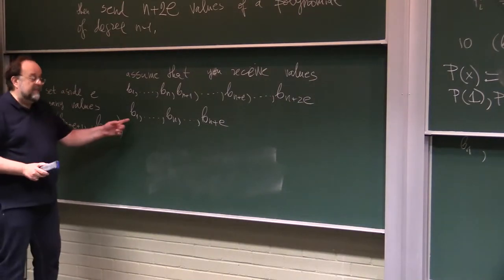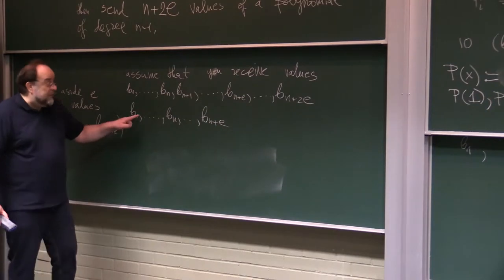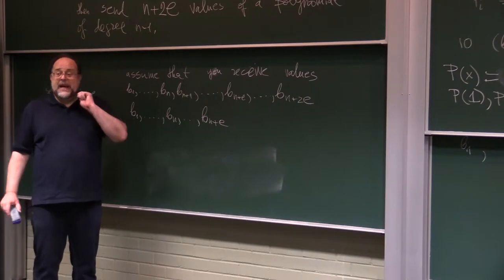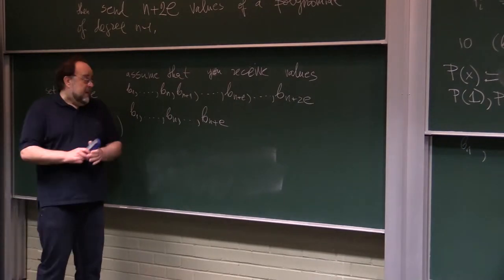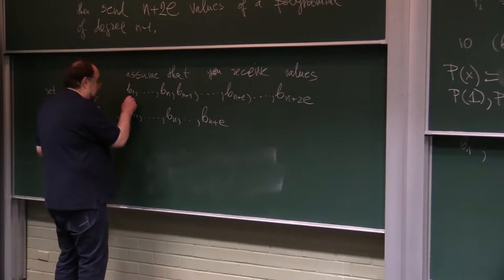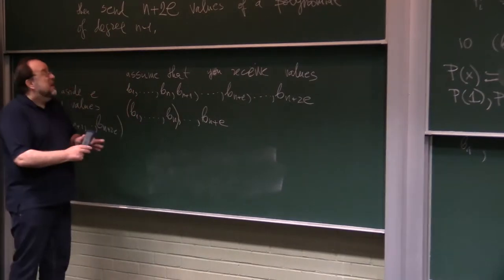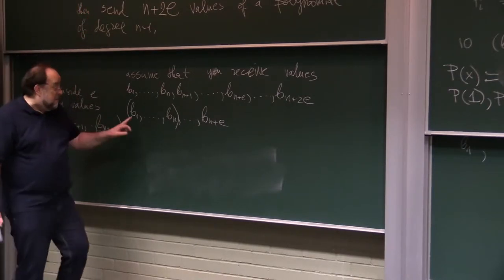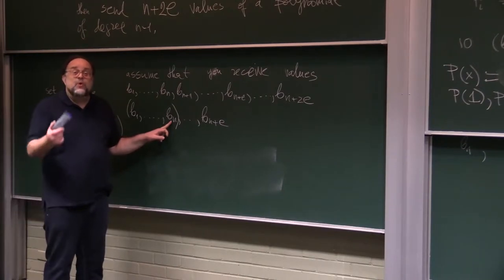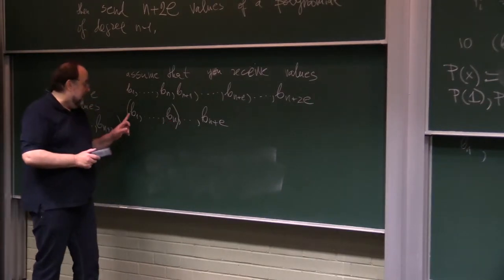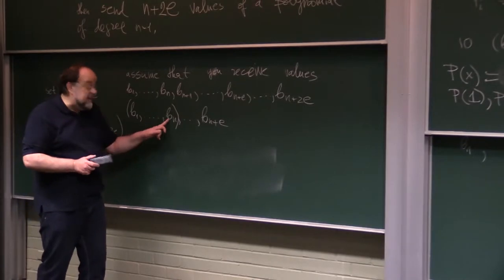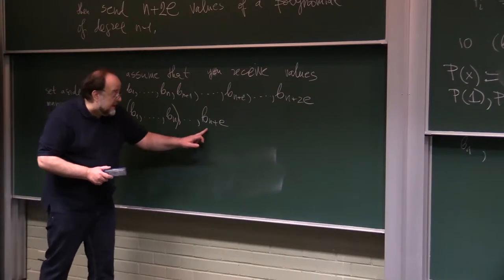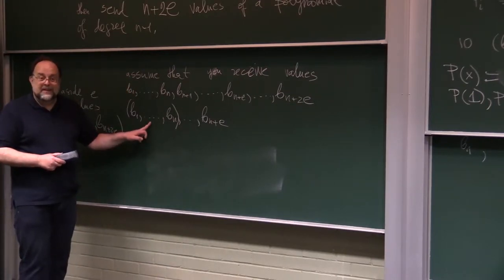Now the trick is the following. Out of these values that you chose, only e of them can be wrong, which means that these n values will have to be the correct values of your polynomial. But there are n many of them, so there is only one polynomial that will have these values, and then you simply check if the rest fits that polynomial.